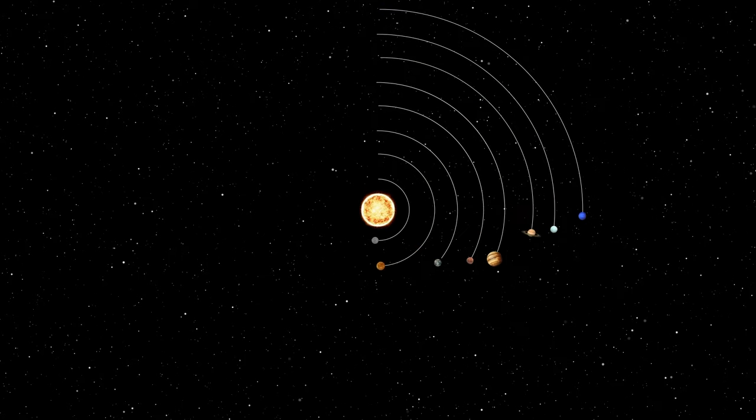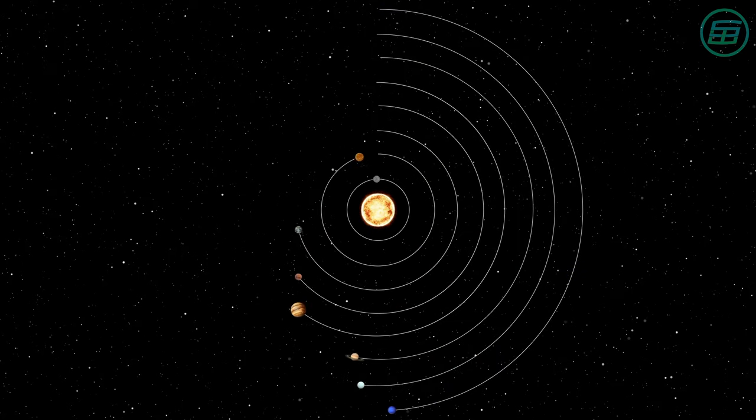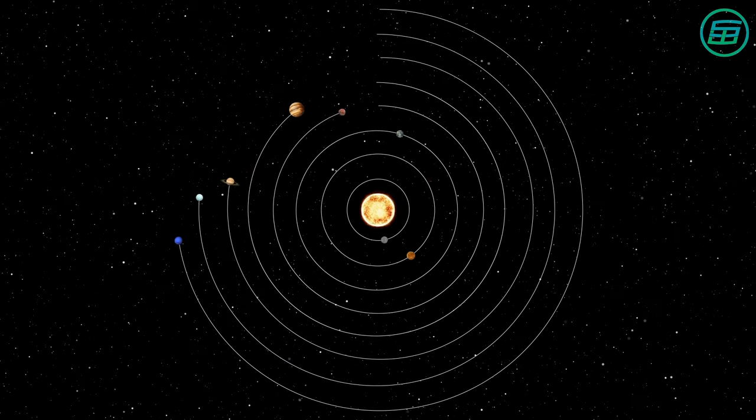As you know, all the planets in the solar system spin on their own axes, as well as revolving around the Sun.